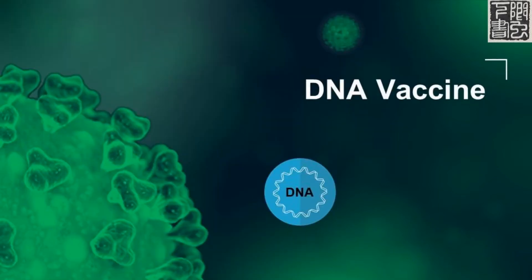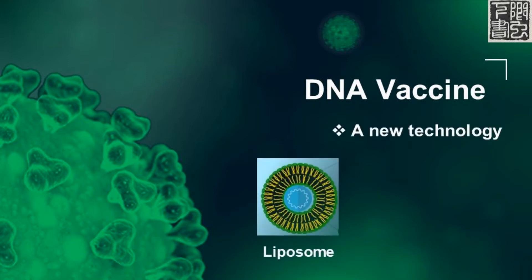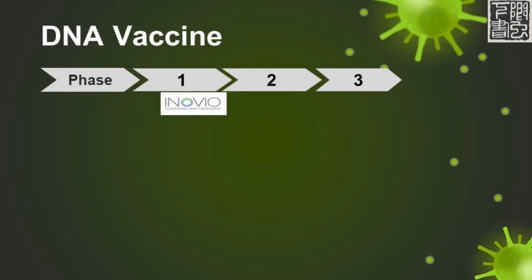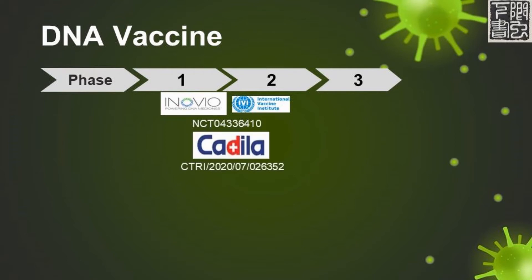The DNA vaccine contains a circular DNA that encodes the COVID spike protein, packaged in liposome or nanoparticles. DNA vaccine is easier to produce than conventional vaccine, but the technology is unproven and does not have an approved vaccine in the market. Inovio, an American company with experience in developing the MERS vaccine, and the International Vaccine Institute in Korea are working on a DNA vaccine in a combined Phase 1 and 2 trial. The vaccine by Cadula Healthcare in India is also in a combined Phase 1 and 2 trial.